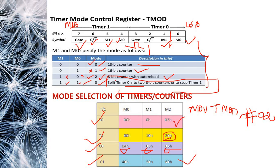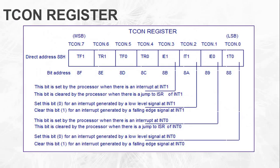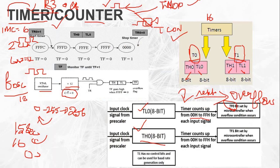This is the mode selection for timer and counter. We select how we need the timer or counter to run using these mode bits in the TMOD register.